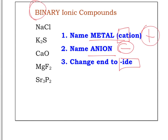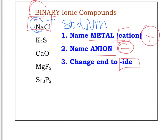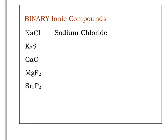The first compound we're going to name is NaCl. You might already know this as table salt, but how do we get the chemical name? We name the metal cation first — Na is sodium, so we write sodium. Then we name the anion but change the ending to -IDE. So instead of chlorine, we call it chloride. Therefore NaCl is sodium chloride.